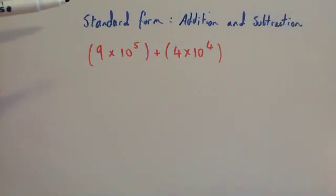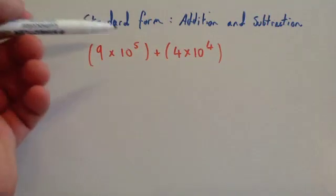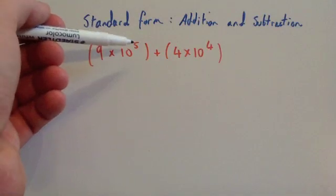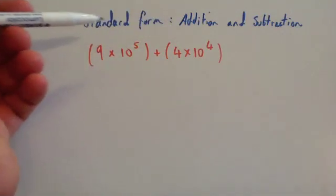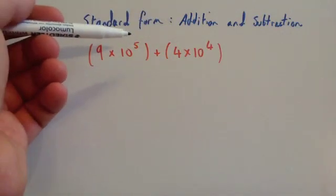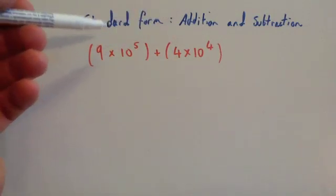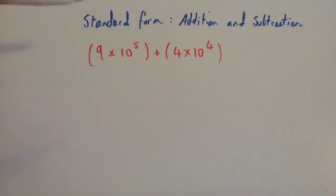In this video we're going to look at standard form and addition and subtraction of numbers that are in standard form. Whenever you're doing that, in general there's no easy rule to help you do it unless the powers for the ten are exactly the same. So for instance if I had 9 times 10 to the 5 plus 4 times 10 to the 4, I personally would write this number out in full and then work it out.